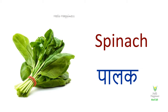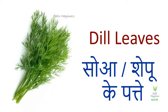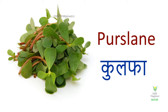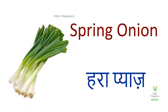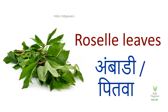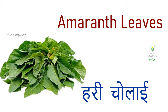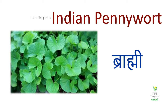Spinach — Palak. Dill leaves — Sova or Shepu ke Patte. Coriander leaf — Hara dhaniya ya dhaniya patta. Purslane — Kulfa. Spring onion — Hara pyaz. Roselle leaves — Ambadi ya pitwa. Fenugreek leaves — Methi ke patte. Amaranth leaves — Hari chaulai. Indian pennywort — Brahmi.